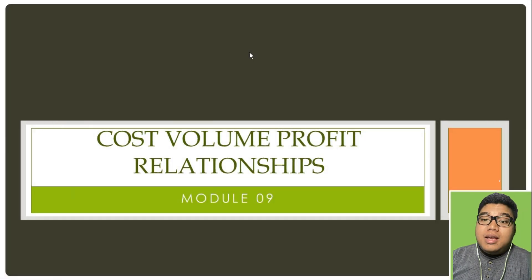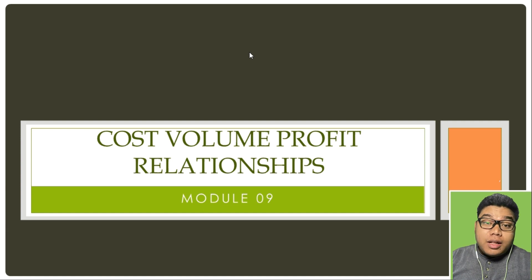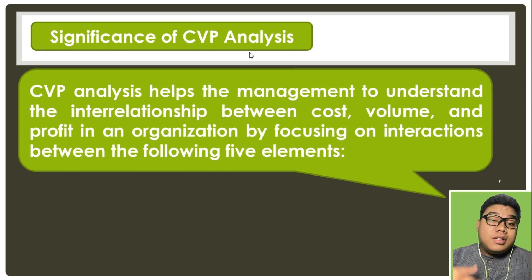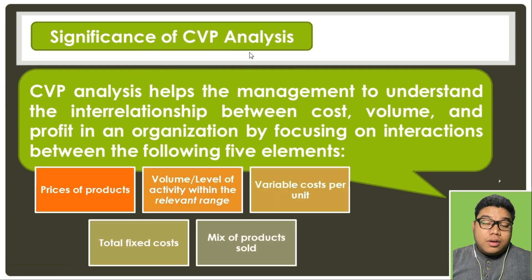This is our discussion for cost-volume-profit relationships, which is our last module for midterms. We will talk about the relationship of how cost and volume affect the profit that the company realizes throughout its operations. CVP analysis helps management understand the interrelationship between cost, volume, and profit in an organization by focusing on the interactions between these elements.